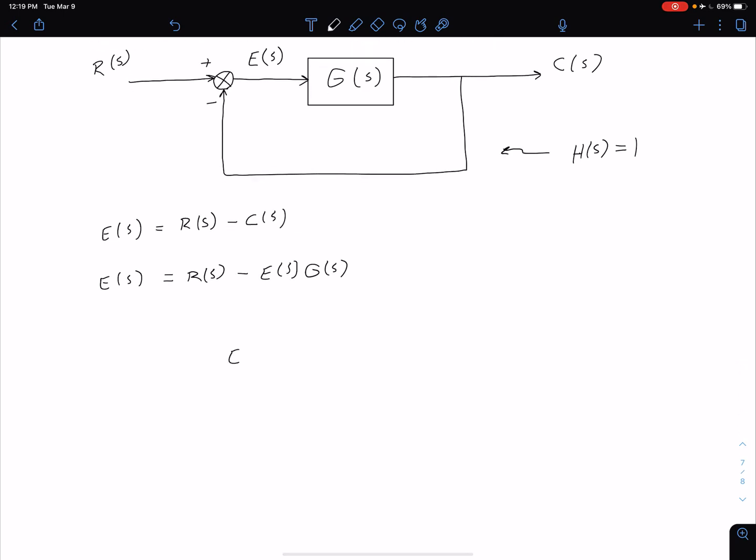We'll get something very similar to what we saw when we were looking at our feedback form in our system reduction unit. We get that this error signal is equal to R of S divided by 1 plus G of S.